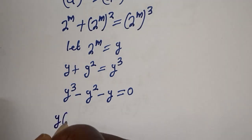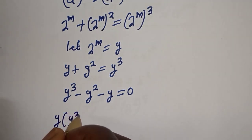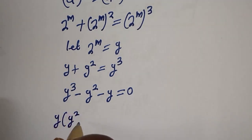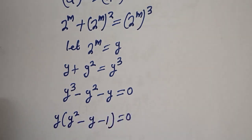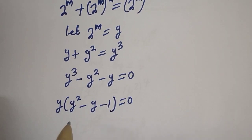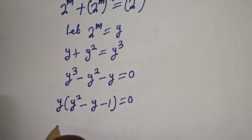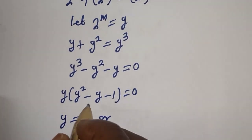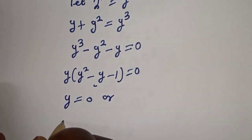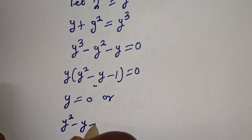Factoring y out: y bracket open, y squared minus y minus 1, bracket close, is equal to 0. There are two cases: the first case is y equals 0, or the second case y squared minus y minus 1 equals 0.